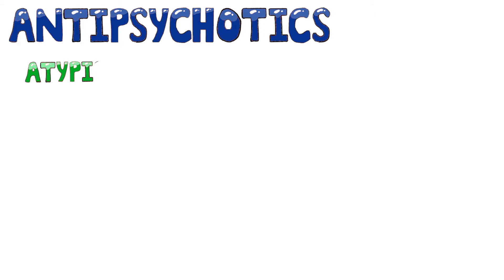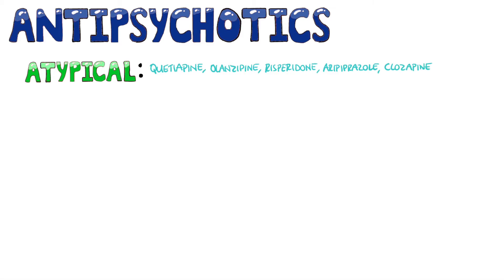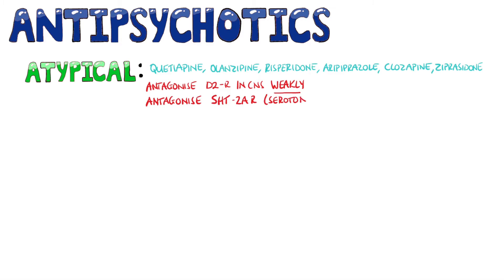Now for the atypical, or second generation, antipsychotics. Examples include quetiapine, olanzapine, risperidone, aripiprazole, clozapine, and ziprasidone. Like the typical antipsychotics, these also bind and antagonize the D2 receptors in the CNS, but are much weaker in this effect. Instead, they have a strong effect on binding and blocking serotonin receptors, specifically the 5-HT2A receptors, and so it is thought that they better modulate the serotonin-dopamine balance.